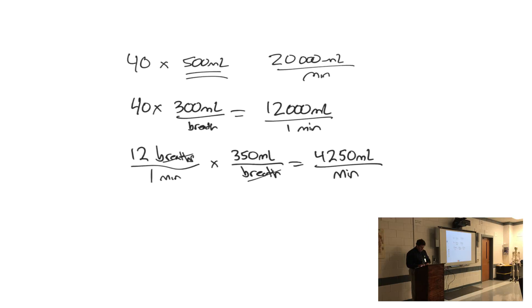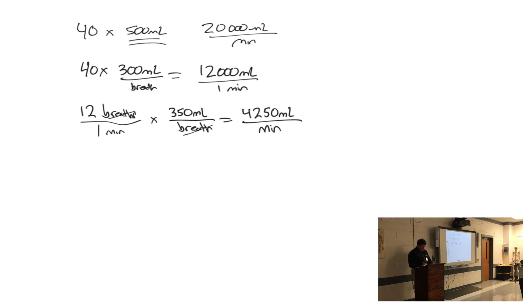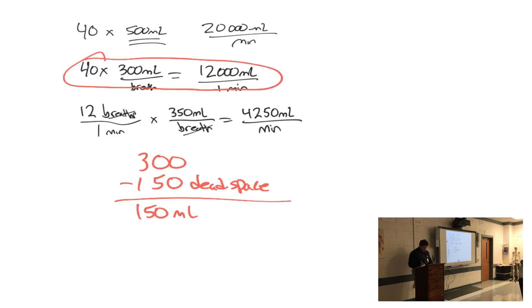Now, if I look at just dead space, and take the 150 milliliters out of there, and somebody who's breathing fast. If they're breathing 40 times a minute, and each breath is 300 milliliters, how much is getting down to the alveoli? 150. So the 150 of dead space doesn't change ever. That's just how big your mouth and your trachea and your bronchi are. That doesn't change.